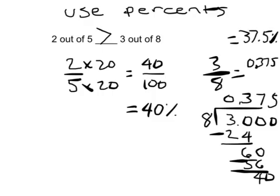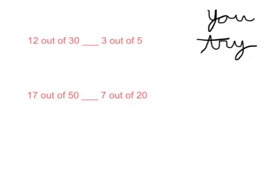And really, what we're doing is we're actually not comparing two values, but we're comparing two datasets. The dataset 2 out of 5, and the dataset 3 out of 8. Please copy down these two problems and hit pause.